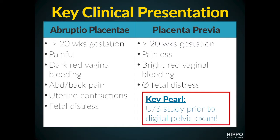Placenta previa, on the other hand, is a painless condition. It's associated with bright red vaginal bleeding and no fetal distress.